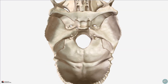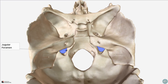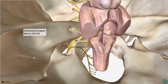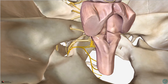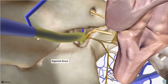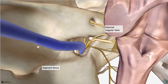Working inferiorly within the posterior cranial fossa we find the jugular foramen, a large opening through which several structures pass. It can be thought of in three sections: anterior, middle, and posterior. Three cranial nerves pass through the middle section: the glossopharyngeal nerve, cranial nerve 9, the vagus nerve, cranial nerve 10, and the cranial part of the accessory nerve, cranial nerve 11. The inferior petrosal sinus passes into the anterior part, and the sigmoid sinus passes into the posterior compartment to form the internal jugular vein. In addition, there are meningeal branches of the pharyngeal and occipital arteries which pass through the posterior part of the jugular foramen.